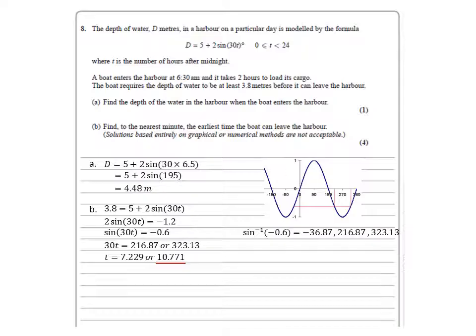But we need to convert this into a time. So 10 is nice and easy, 10 o'clock. To work out the minutes, we're going to multiply our decimal by 60, which gives us a time of 10.46am.